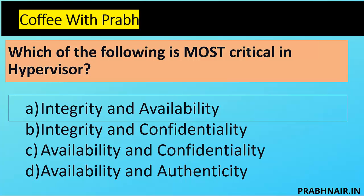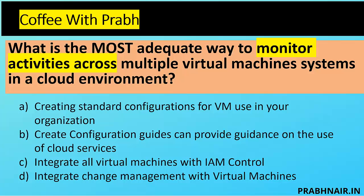Next coffee shot: what is the most adequate way to monitor activities across multiple virtual machine systems in a cloud environment? Option A: create a standard configuration for VM use in your organization. Option B: create a configuration guide providing guidance on the use of cloud services. Option C: integrate all virtual machines with IAM controls — IAM addresses authorization, but the question is about monitoring activities.